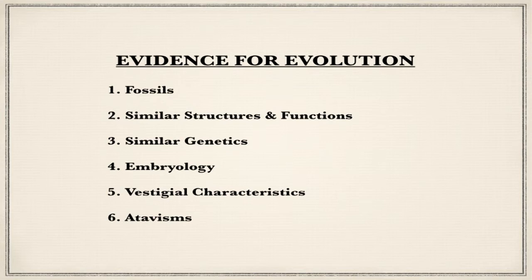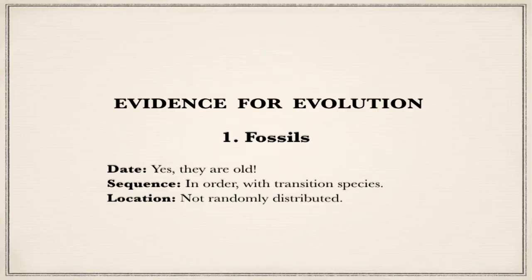So let's start with fossils — the dating of fossils. Yes, they are quite old. They're also found in the sequence that you would expect from evolution. And the location is what you would expect from evolution. Something doesn't start to evolve in one part of the world and then jump back. Closely related fossils, especially if they're land species, are found close together geographically.